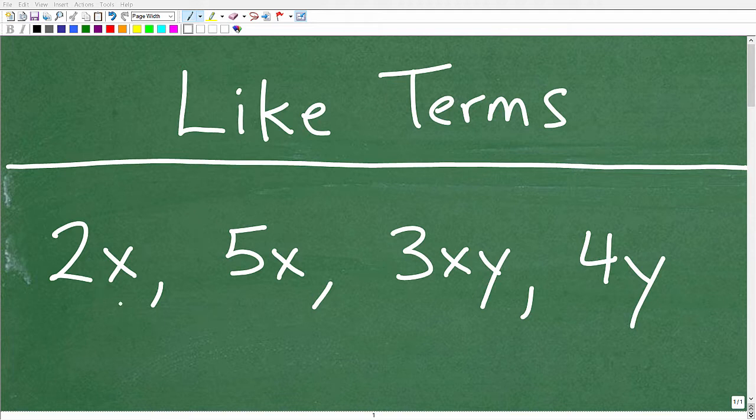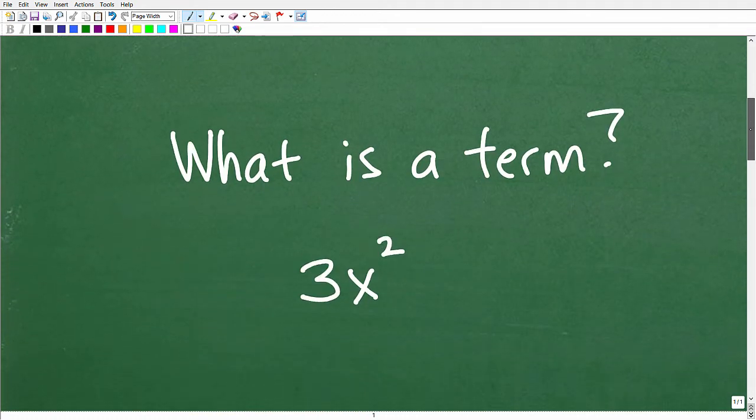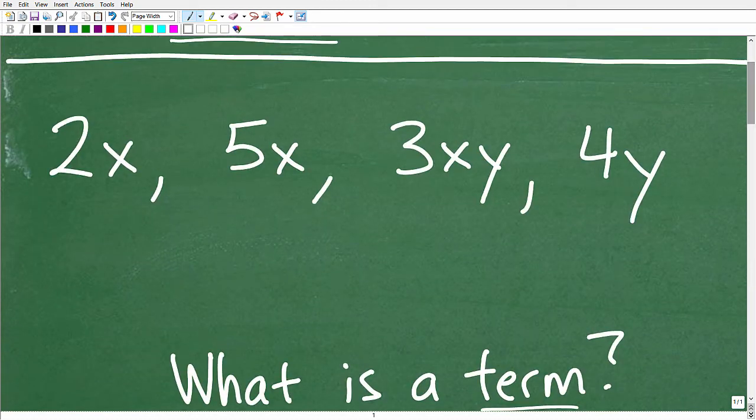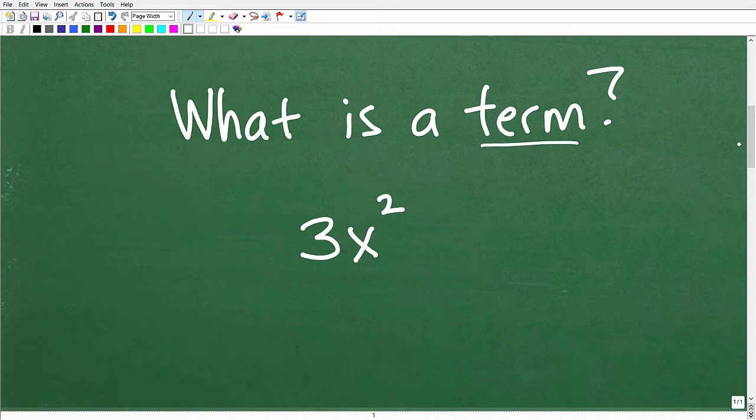So you can see here I have 2x, 5x, 3xy, 4y. These are all examples of terms. So we have this word terms, and we're specifically talking about like terms. When do two terms like one another, if you will? So let's get into this by first answering the question, what is a term? We know what a term looks like, right? But really what makes up a term?